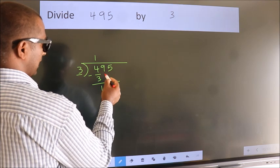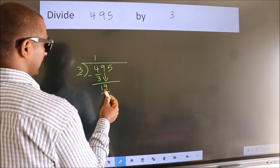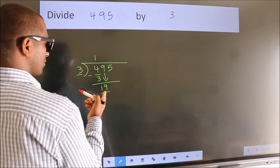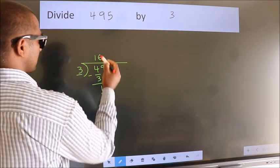After this, bring down the beside number. So, 9 down. So, 19. A number close to 19 in 3 table is 3, 6, 18.